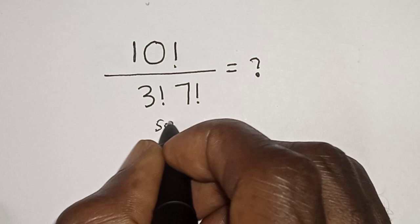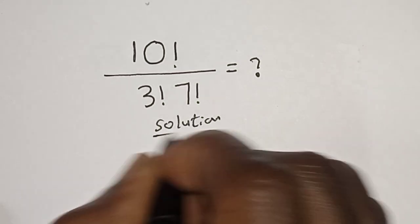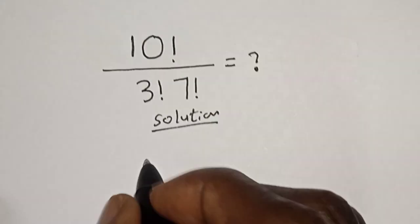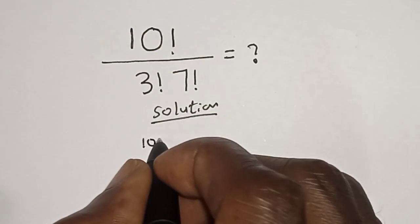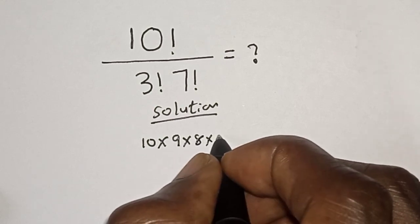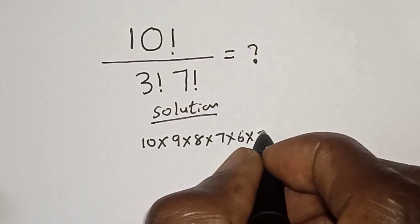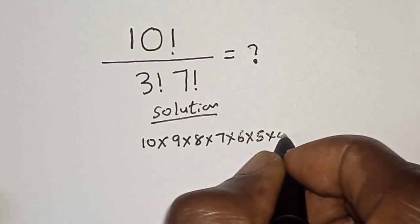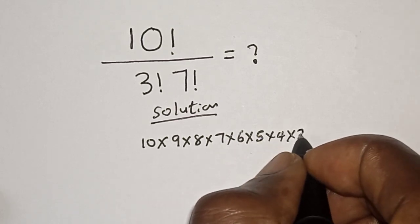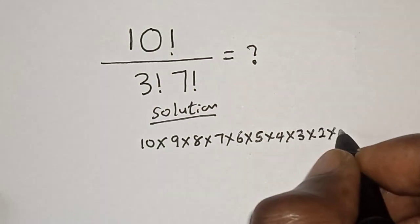Solution: 10 factorial can be expressed as 10 times 9 times 8 times 7 times 6 times 5 times 4 times 3 times 2 times 1.